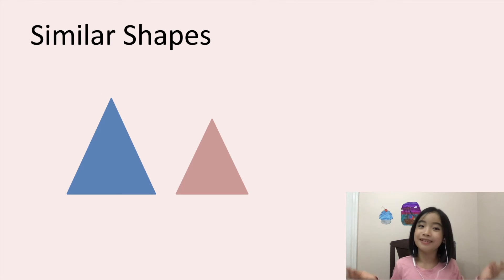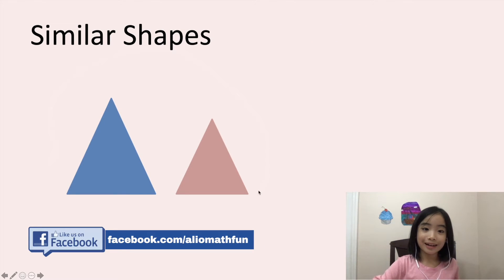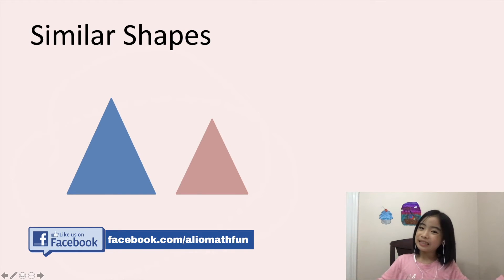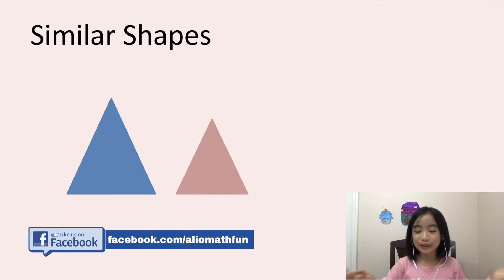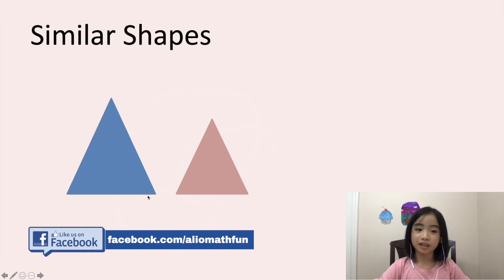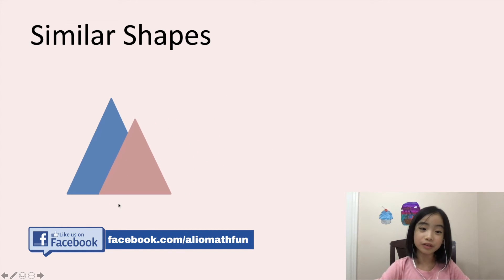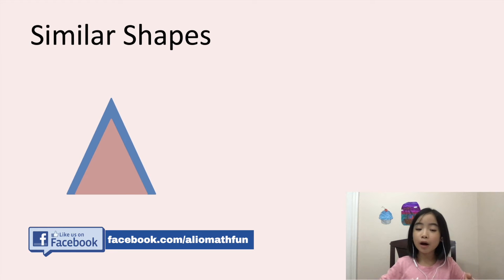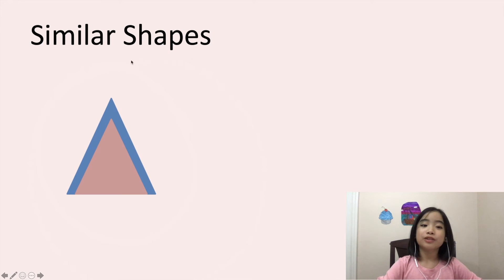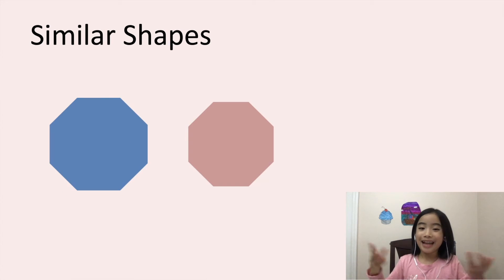Let's look at a few examples. Here are two shapes. Are they similar shapes? Well, they're both triangles. And if I slide the pink triangle on top of the blue triangle, it's smaller than the blue triangle. So these triangles are similar shapes.